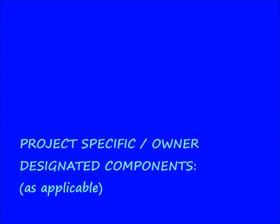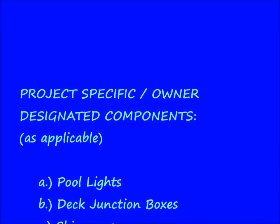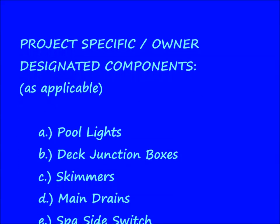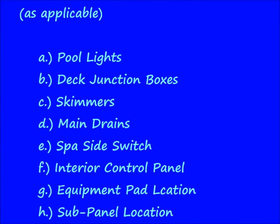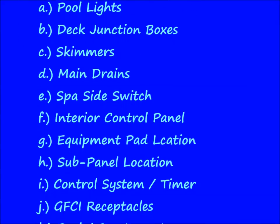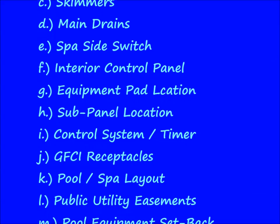What's shown on sheet P1 are the project-specific owner-designated components: pool lights, deck junction boxes, skimmers, main drains, spa side controls, interior control panels, equipment pad locations, sub-panel location, and control system timer and automation.